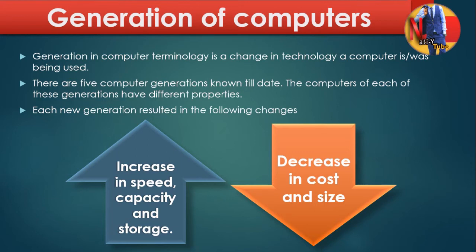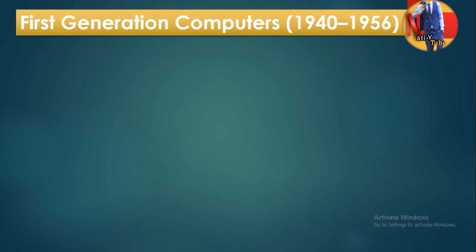There is also decreasing cost and size. The cost decreases and the size decreases with each new generation. So the key changes across generations are: increasing speed, capacity, and storage, while decreasing cost and size.